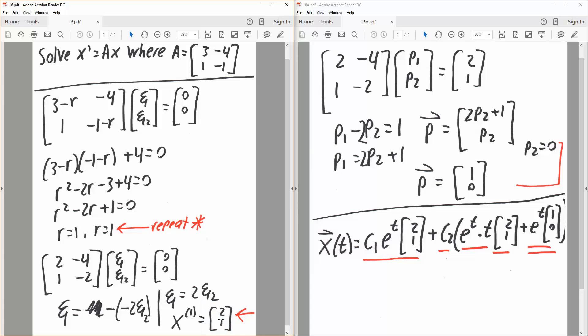But we're not done. Since it repeats, we need to do something different. Instead now, we continue this. So 2, 1, negative 4, negative 2 remains the same.